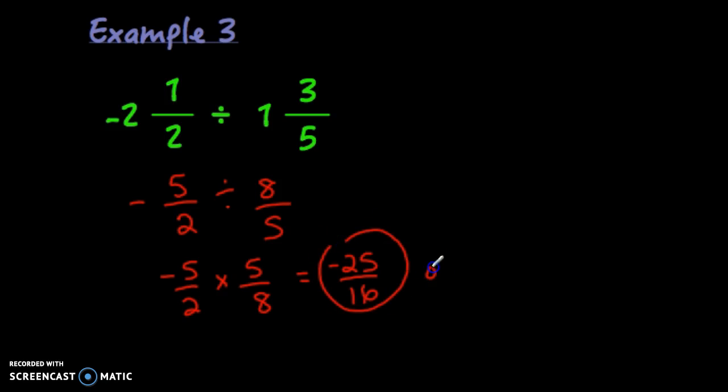And since there are no common factors, you can leave it negative 25 over 16. Or again, you can say 16 goes into 25 one time, there are 9 left over. So 1 and 9 sixteenths. That was negative. Either of those is a perfectly acceptable answer.